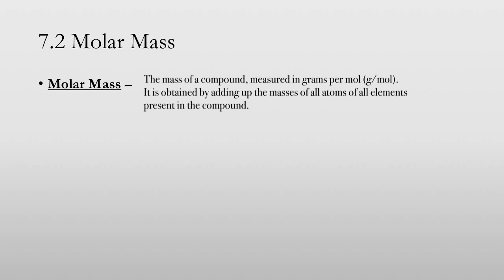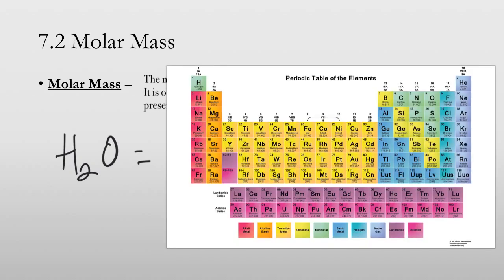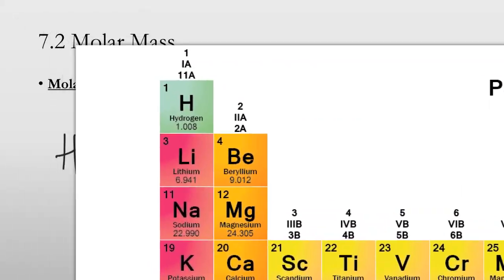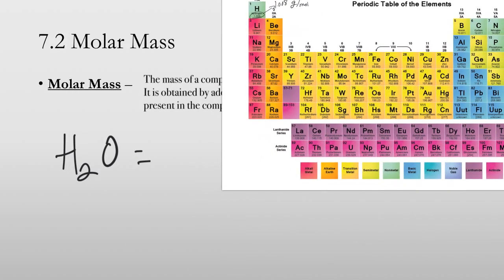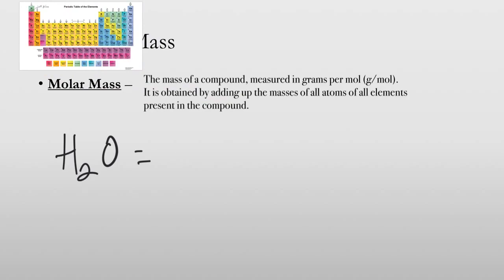So for example, if I say what is the molar mass of water, what you need to do is find the mass of each element, and I can get that from the periodic table. We're going to find hydrogen, which is right here. The atomic mass of hydrogen is 1.008, and that is in grams per mole. And there's two of those hydrogen atoms, so we have two times 1.008 grams per mole.